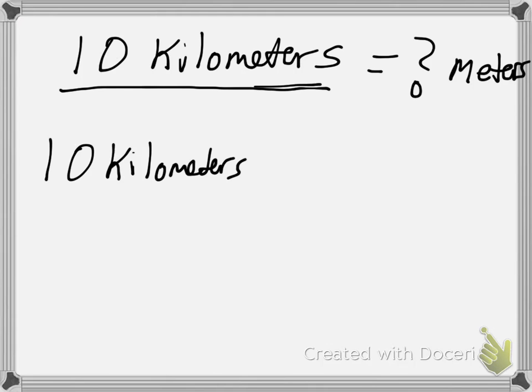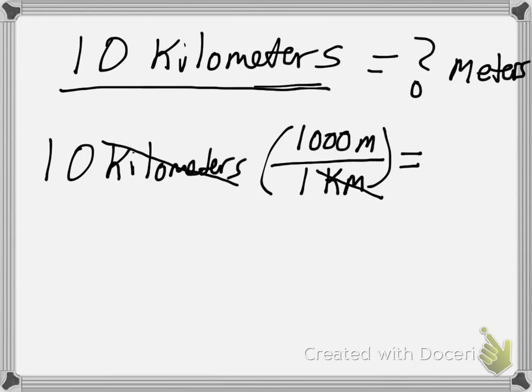And we know our conversion factor is: for every one kilometer, there's one thousand meters. And the reason I have to set my proportion up this way so that my kilometers will cancel, so I need kilometers on bottom here and kilometers up top here. And now all I need to do is multiply 10 by a thousand, and that's just 10,000.